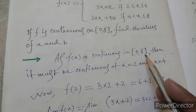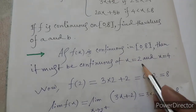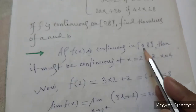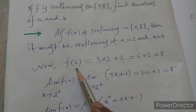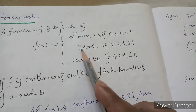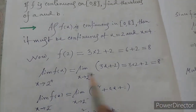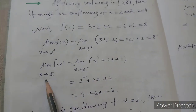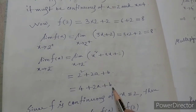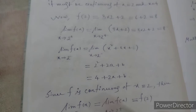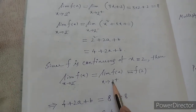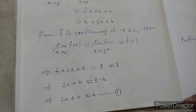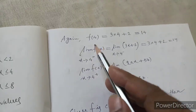Since f(x) is continuous on the closed interval [0, 8], it must be continuous at x equal to 2 and x equal to 4. At x equal to 2: f(2) equals 3 times 2 plus 2, which is 8. The left-hand limit equals 4 plus 2a plus b. Since f is continuous at x equal to 2, the left-hand limit equals the right-hand limit equals the function value, giving equation one: 2a plus b equal to 4.